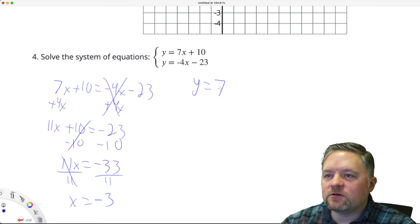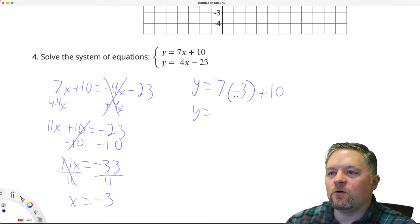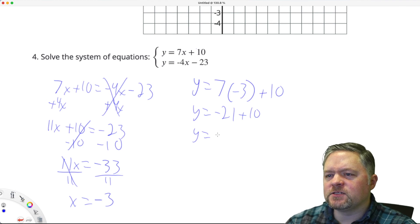Y equals 7X. But X, we know, is negative 3. Plus 10. Y equals 7 times 3 is 21. 7 times negative 3 is negative 21. Plus 10. Y equals negative 21 plus 10 is negative 11.